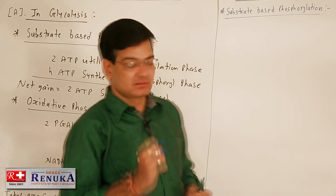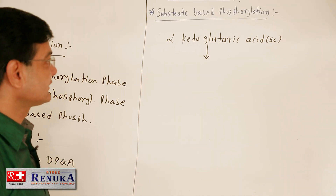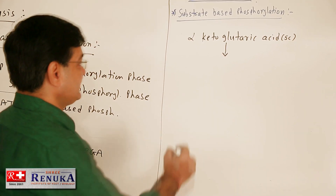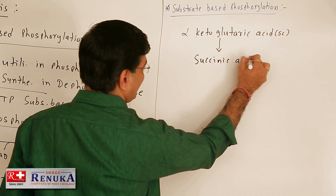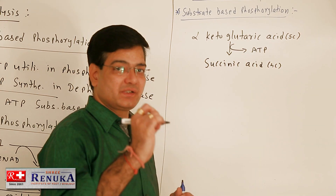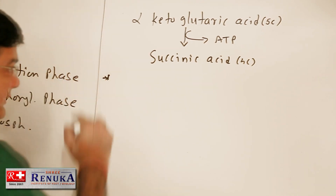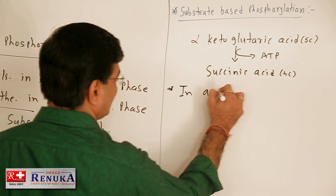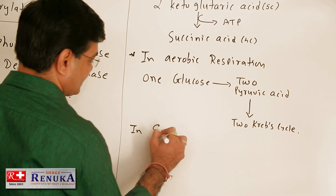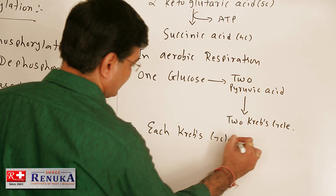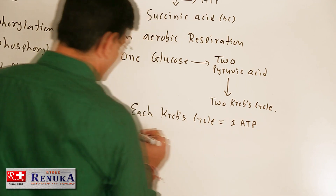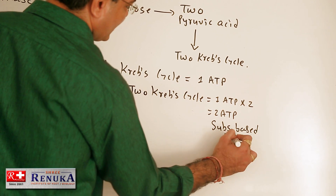In the Krebs cycle, substrate-based phosphorylation also occurs. When alpha-ketoglutaric acid (5-carbon) in the matrix of mitochondria converts into succinic acid (4-carbon), 1 ATP is synthesized by substrate-based phosphorylation. In each Krebs cycle, 1 ATP is synthesized this way.